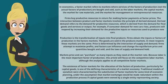The existence of factor markets for the allocation of the factors of production, particularly for capital goods, is one of the defining characteristics of a market economy. Traditional models of socialism were characterized by the substitution of factor markets for some kind of economic planning, under the assumption that market exchanges would be made redundant within the production process if capital goods were owned by a single entity representing society.